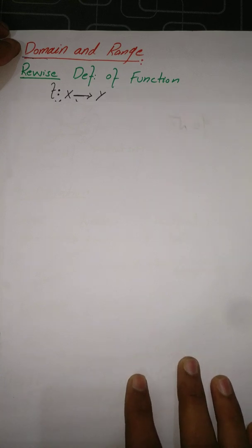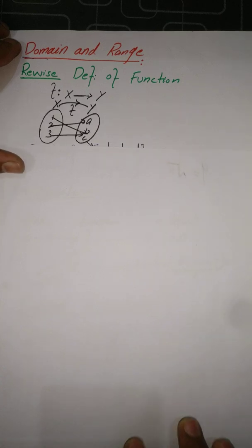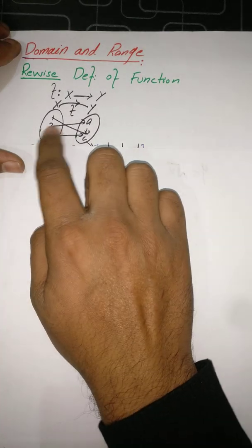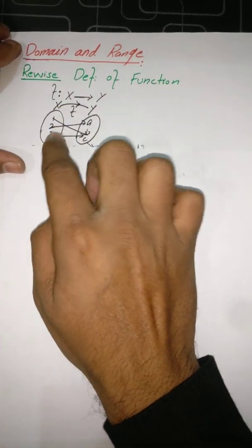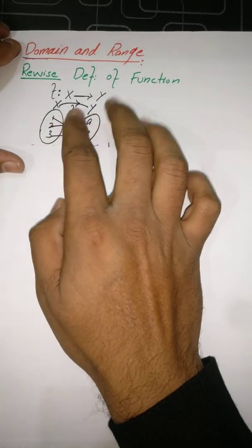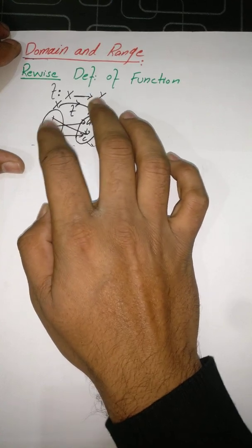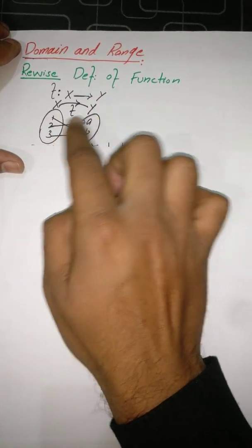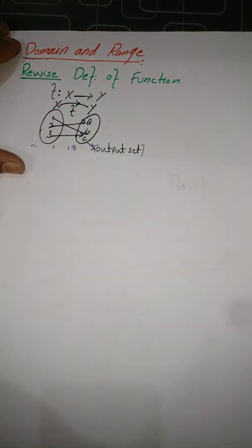Dear students, in my first lecture I already defined the function. For example, f is a function from X to Y. Let's suppose the set X has the elements 1, 2, 3 and set Y has the elements a, b, c. Then f is a function from X to Y if every element of set X has a unique image in set Y. That's why f is a function from X to Y.